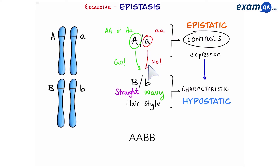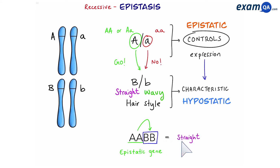Let's say we have a genotype — what phenotype will this person have? To find that out, we first look at the epistatic gene. In this case the epistatic gene is overall dominant, which means go ahead to the next gene and read it. The next gene has two big B's — dominant overall — and therefore this person will have straight hair.